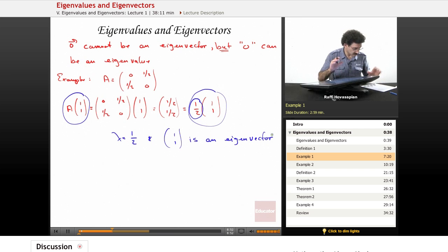Okay, now a given lambda can have many eigenvectors. Often we're only interested in one; we don't necessarily need to list them all, so one will do.